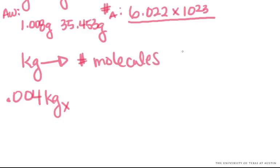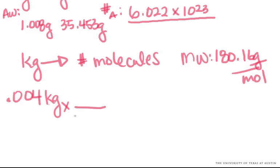So we need to go from kilograms to molecules. Our molecular weight was 180.16 grams per mole. So we know we need to go from kilograms to grams. So let's do that conversion and get rid of kilograms. There's 1,000 grams in a kilogram. Kilograms cancel.